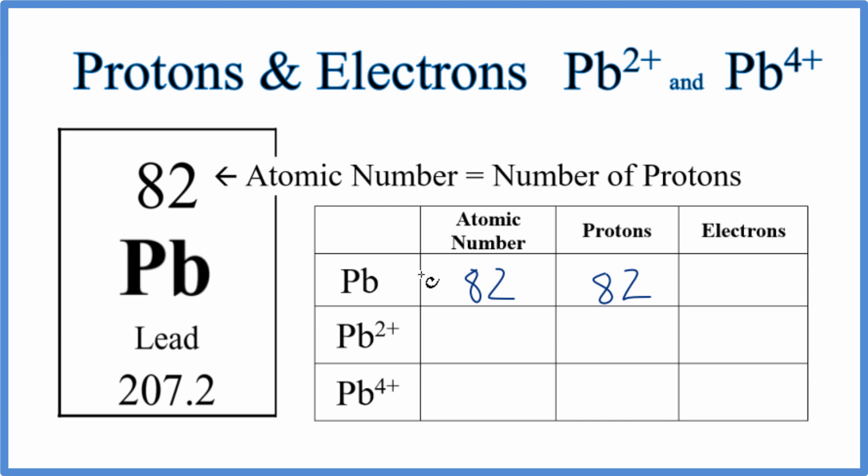The only thing that's going to be different between lead and its ions is the number of electrons. Everything else is the same. So this will be 82, atomic number will always be 82, and there will always be 82 protons for Pb, for lead. It's the electrons that are different.